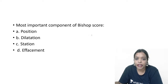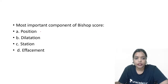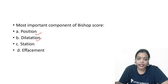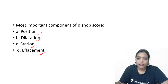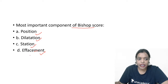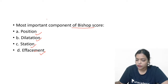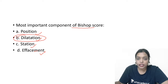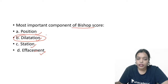The most important component of Bishop's Score is dilatation. Among the parameters — position, dilatation, station, and effacement — the most important component of the Bishop's Score is dilatation. This is a single liner you have to remember: the most important component of Bishop's Score is dilatation.